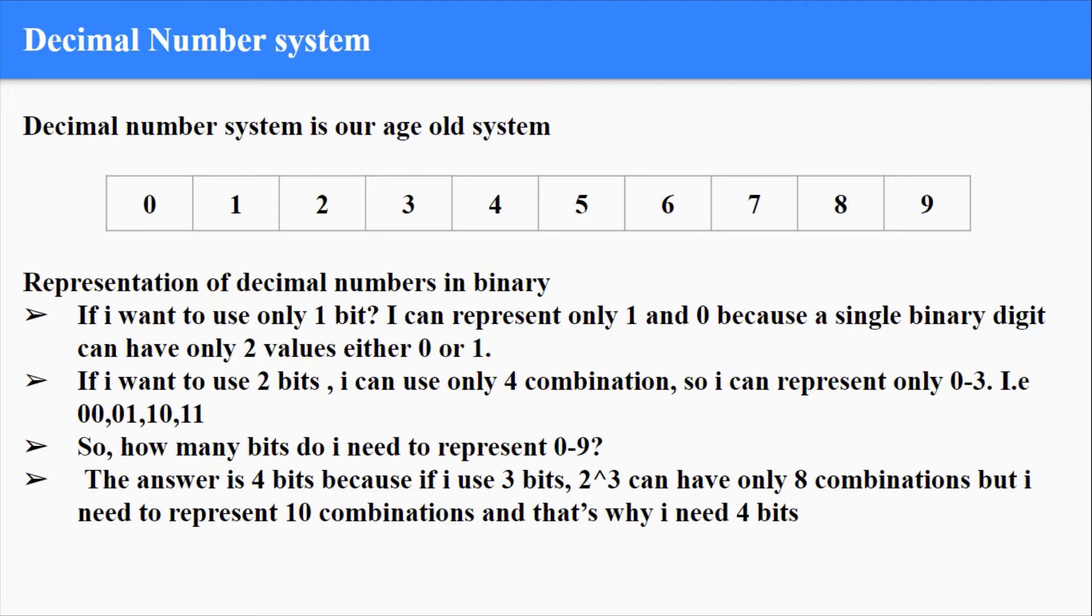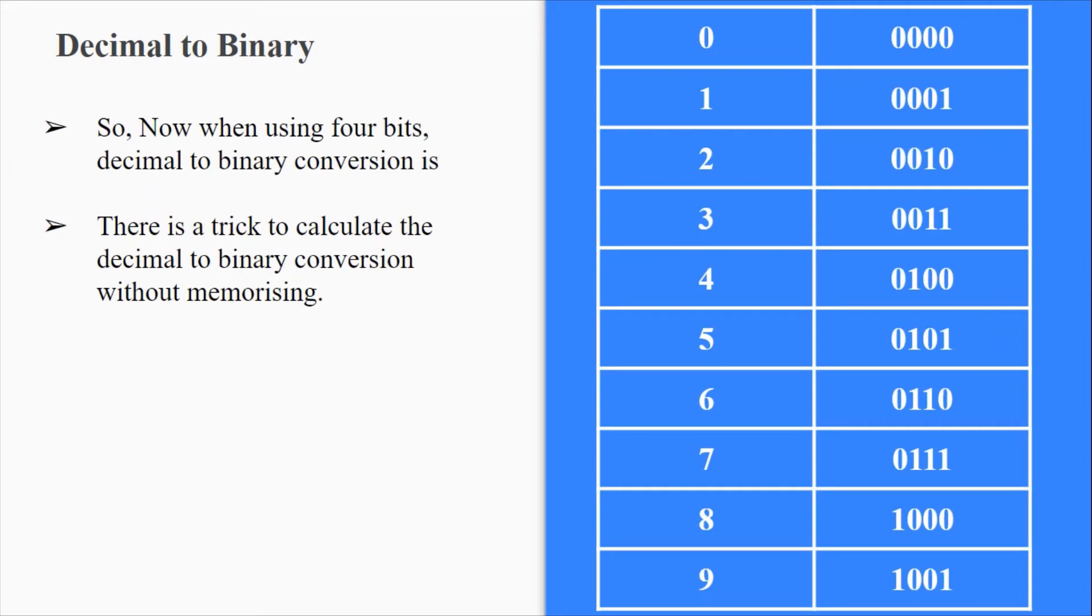Because even if I use 3 bits, I can get only 8 combinations. But what I have in my hand is 10 combinations. So I need to use 4 bits to represent them. So for 0 you have the representation of it in 4 bits, 0 to 9, and it goes like this.